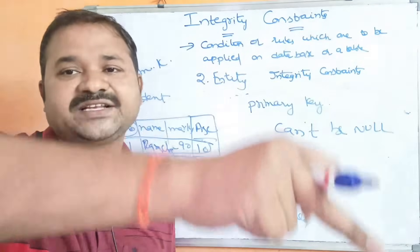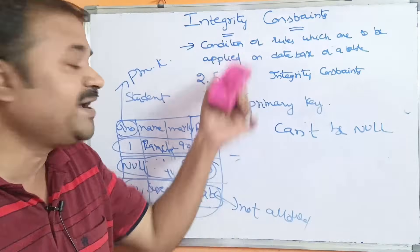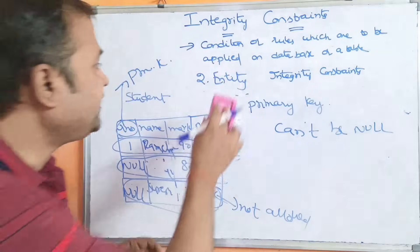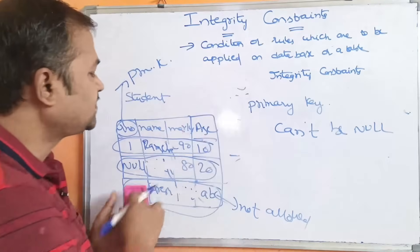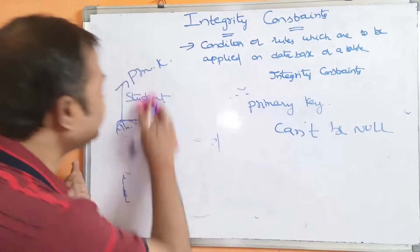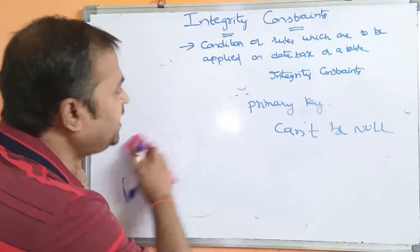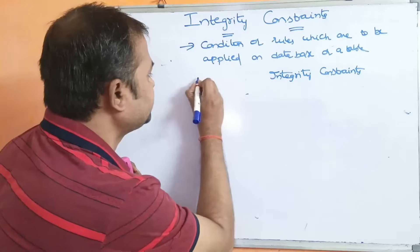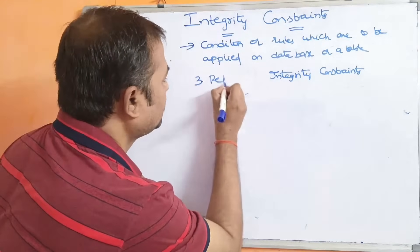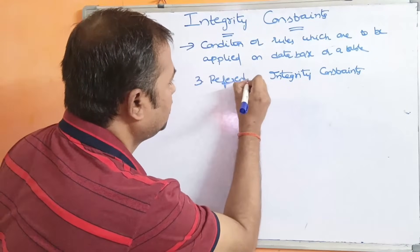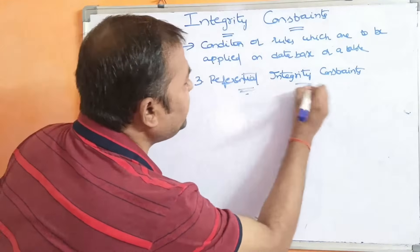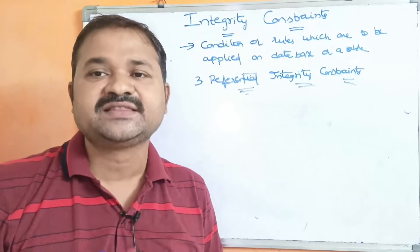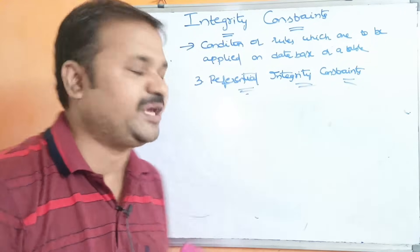Entity integrity constraints are mainly useful in order to provide uniqueness among the rows in a table or relation, and for that purpose we maintain the primary key. So, entity relates to row details, whereas domain relates to column values — attribute values. Now, let us see the third one: referential integrity constraints. Referential integrity constraints are mainly useful in order to establish the relationship between two tables.